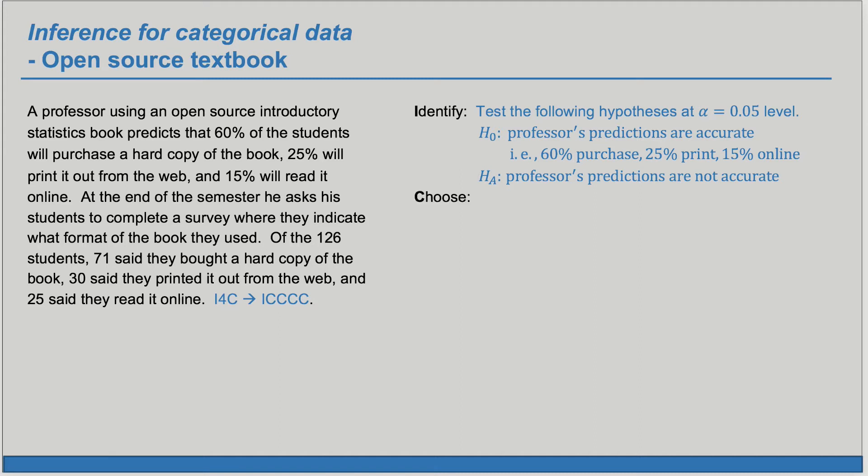Now we're ready to choose the appropriate test. We have one categorical variable and we're looking to see if its distribution matches a hypothesized distribution from H sub O. We're going to do a chi-squared goodness of fit test and now we need to check the conditions.